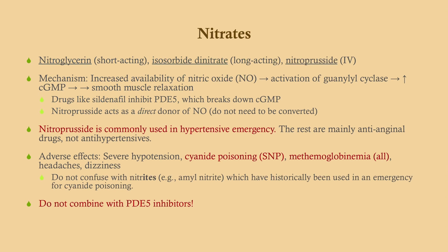Nitrates are very commonly used, but not so much for the outpatient management of hypertension. When given to outpatients, we're generally giving them for angina. However, there is one drug — nitroprusside — that has use in the inpatient setting for hypertension. The mechanism: these drugs all cause increased availability of nitric oxide. Nitric oxide activates guanylyl cyclase, which increases cyclic GMP, ultimately leading to smooth muscle relaxation.